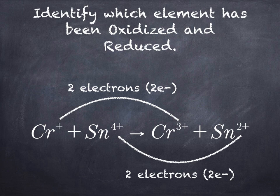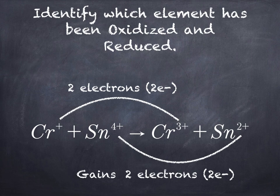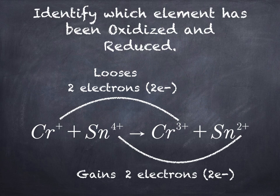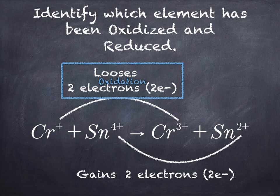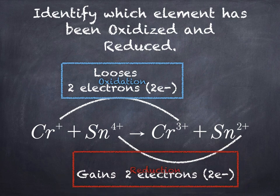Therefore, using our definitions, all we have to think of is the acronym OILRIG. Oxidation is loss, so they're coming from the chromium. They're lost from the chromium. Therefore, they're lost from the chromium and they're gained by the tin. So oxidation would be from the chromium. Chromium would be oxidized and tin would be reduced.